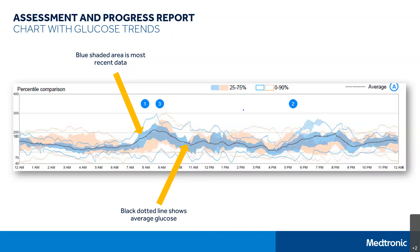The numbers at the top of the trend — like the 1, 2, and 3 that you see here — represent any patterns that may be occurring with your glucose when it is out of the target range. We will further discuss this on the next slide.